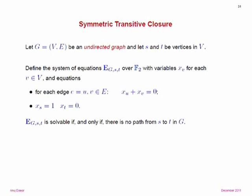For each vertex in your graph, throw in a variable, and for every edge (u,v), throw in the equation x_u + x_v = 0. Set x_s = 1 and x_t = 0. This system is solvable if and only if there's no path from S to T, because this ensures the variables at any two endpoints of an edge must take the same value. Since x_s has value 1, everything in the connected component of S must take value 1, but you require T to take value 0, so the graph must be disconnected.